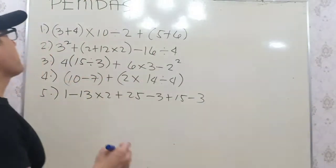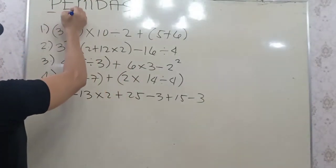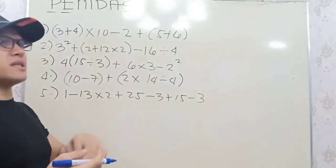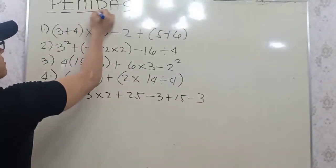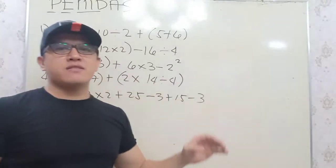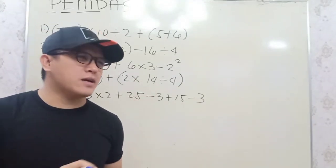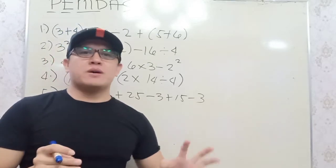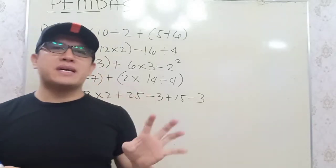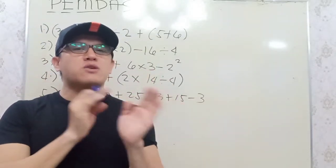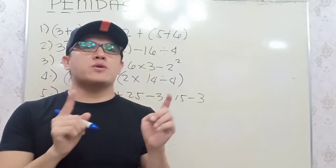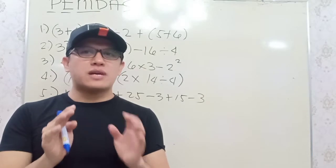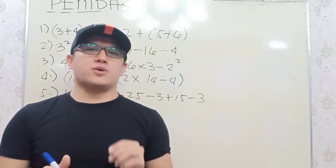Now, parentheses always come first — the quantities inside the parentheses — followed by the exponents. And after that, how do we work out multiplication and division? Does multiplication always come before division? Remember this: multiplication and division — whichever comes first from left to right, that's the operation you perform first.